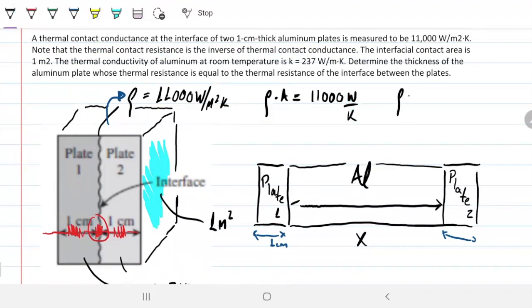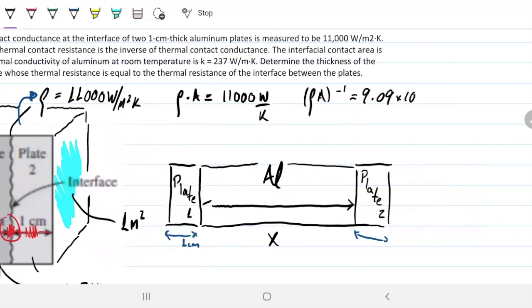So I can invert these guys here to the minus one, not minus one to the minus one. And I would get 9.09 times 10 to the minus 5 Kelvin per watts. And this will be the resistance of the interface or gap resistance or any name you want to call it.